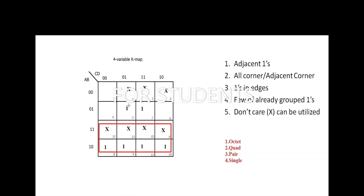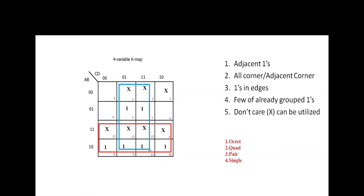So to summarize: adjacent ones, don't care, and already grouped ones work together. You can see that using the first rule, a few of the grouped ones, and don't cares, we can make an octet.